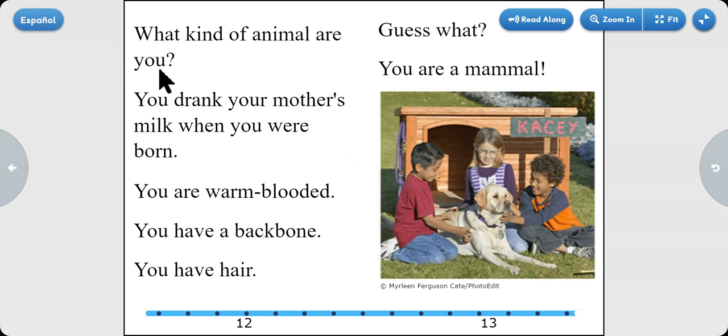What kind of animal are you? You drank your mother's milk when you were born. You are warm-blooded. You have a backbone. You have hair. Guess what? You are a mammal.